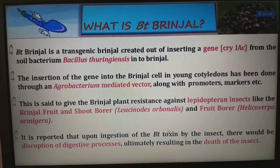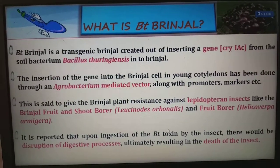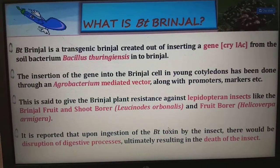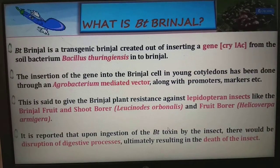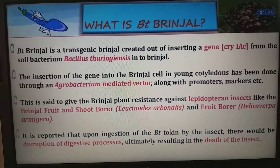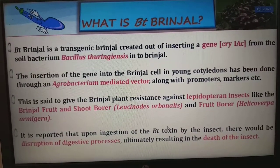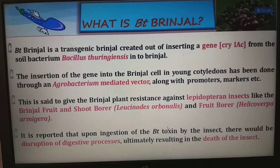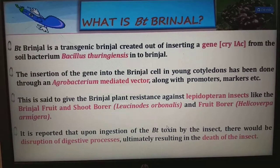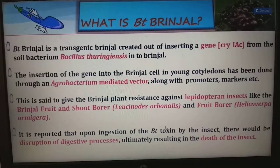Bt brinjal is a transgenic brinjal created by inserting a gene called Cry1Ac from the soil bacterium Bacillus thuringiensis into the brinjal. The insertion of the gene into brinjal cells in young cotyledons is done through Agrobacterium-mediated vector along with promoters, markers, etc. This gives the brinjal resistance against lepidopteran insects like the brinjal fruit and shoot borer. Upon ingestion of the Bt toxin by the insect, there is a disruption of the digestive process, ultimately resulting in death of the insect.